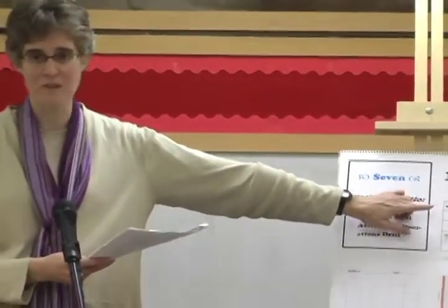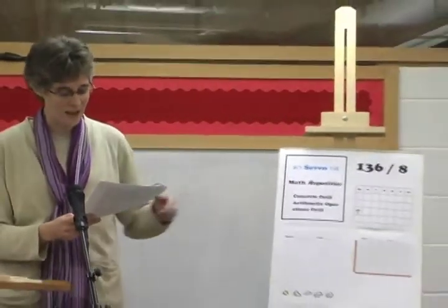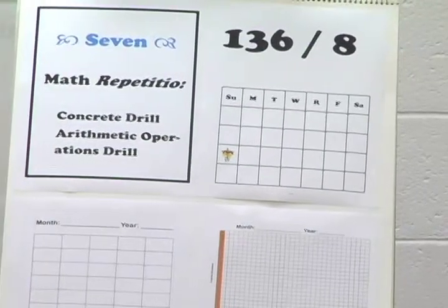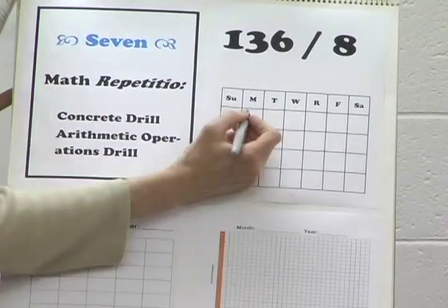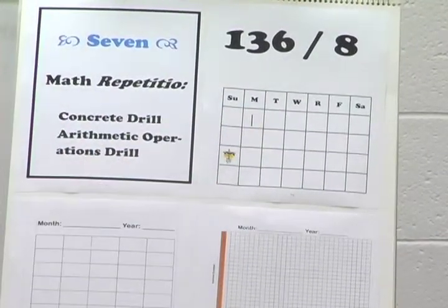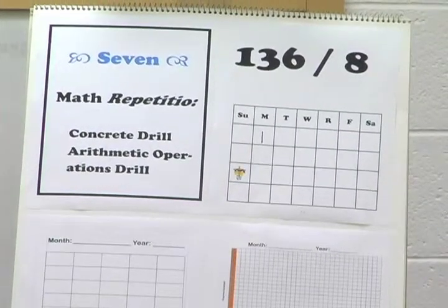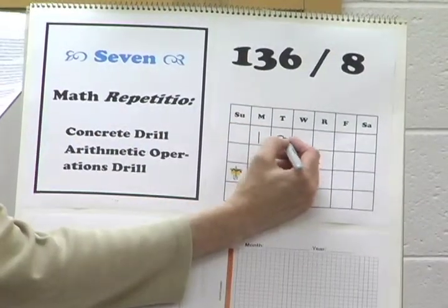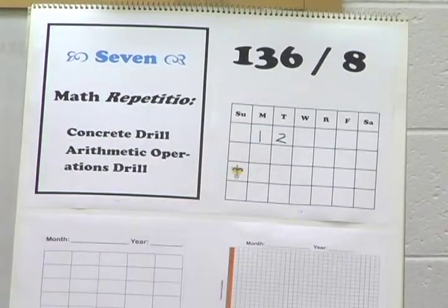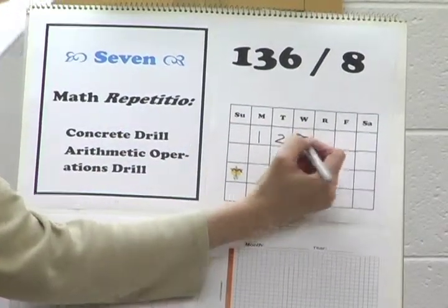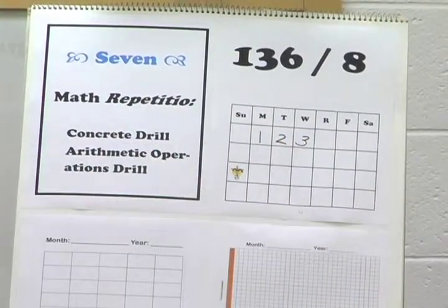First: calendar math. At the beginning of every month, every kid gets a blank calendar. On the first day of the month we write the number one; the second day, two; the third day, three — and so forth.